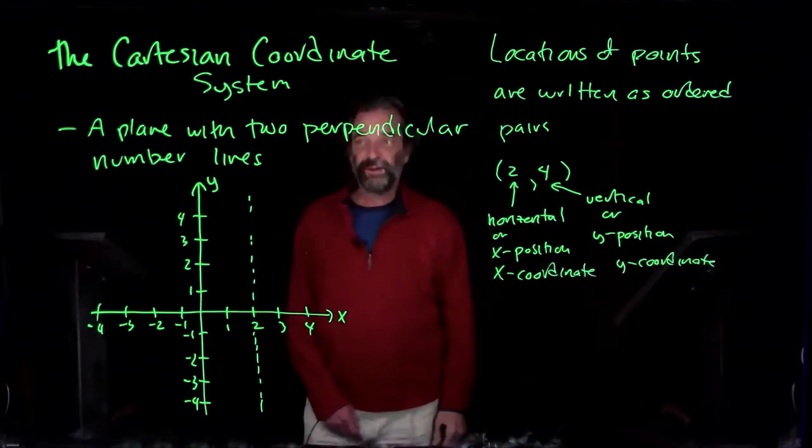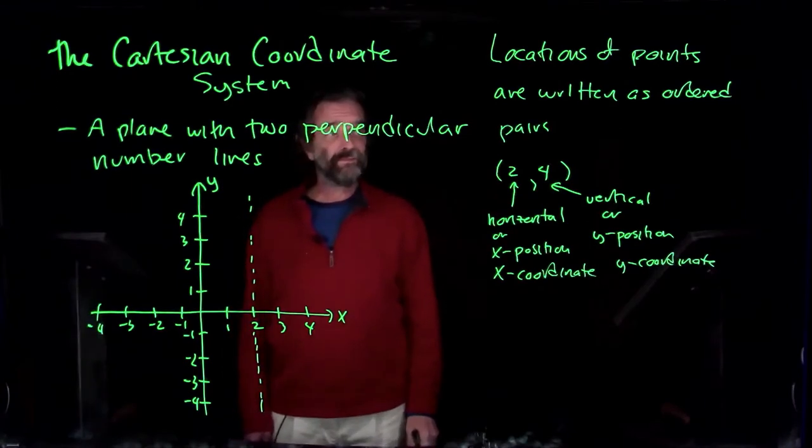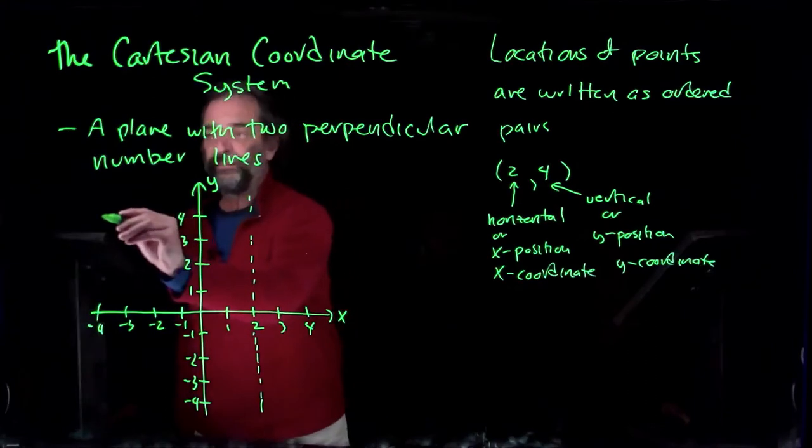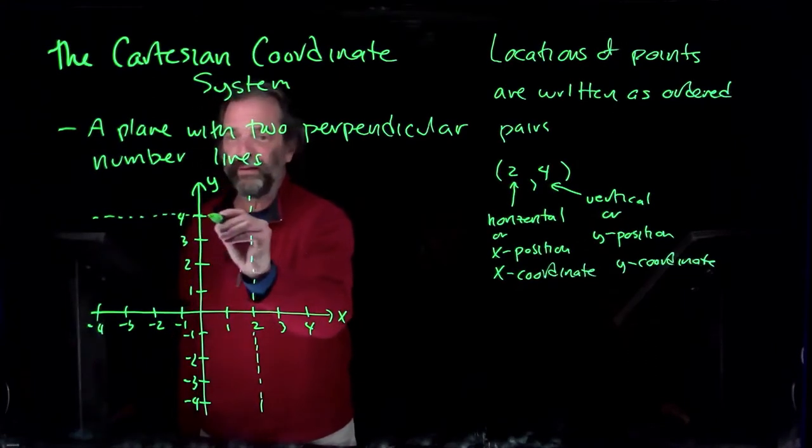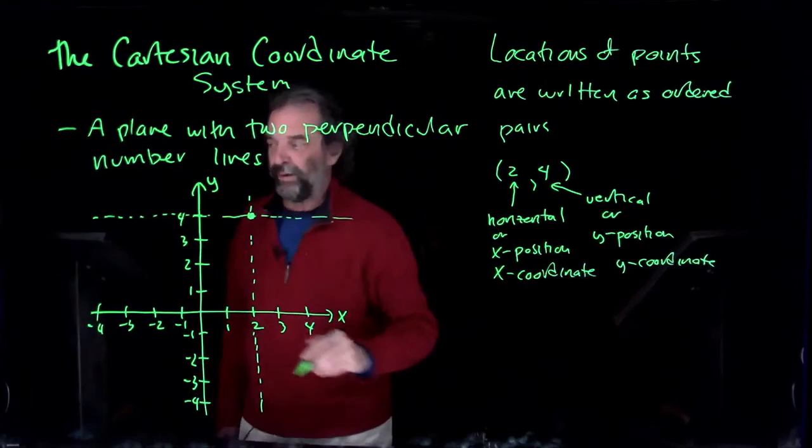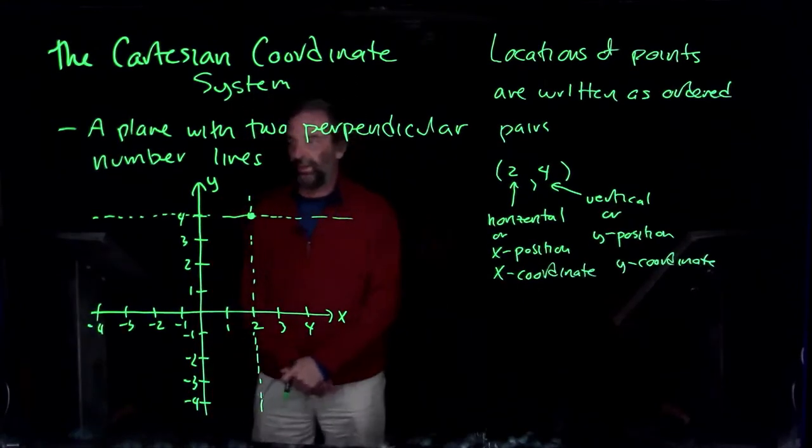So if the y-coordinate is four, that means the vertical position lies across from four on the y-axis. So we look here at a point there: x is two, y is four.